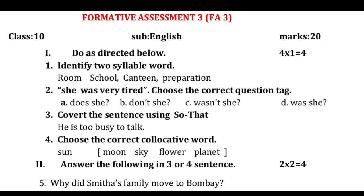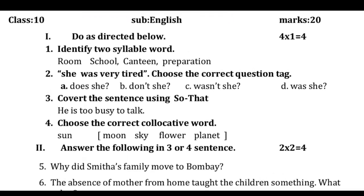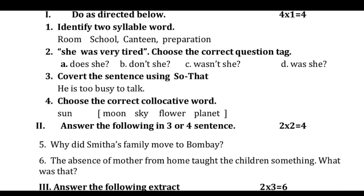Do as directed: identify the two-syllable word from — room, school, canteen, preparation. 'Canteen' is the two-syllable word. Next: 'She was very tired' — choose the correct question tag. The sentence is positive, so the tag should be negative. The answer is option C: 'wasn't she'.